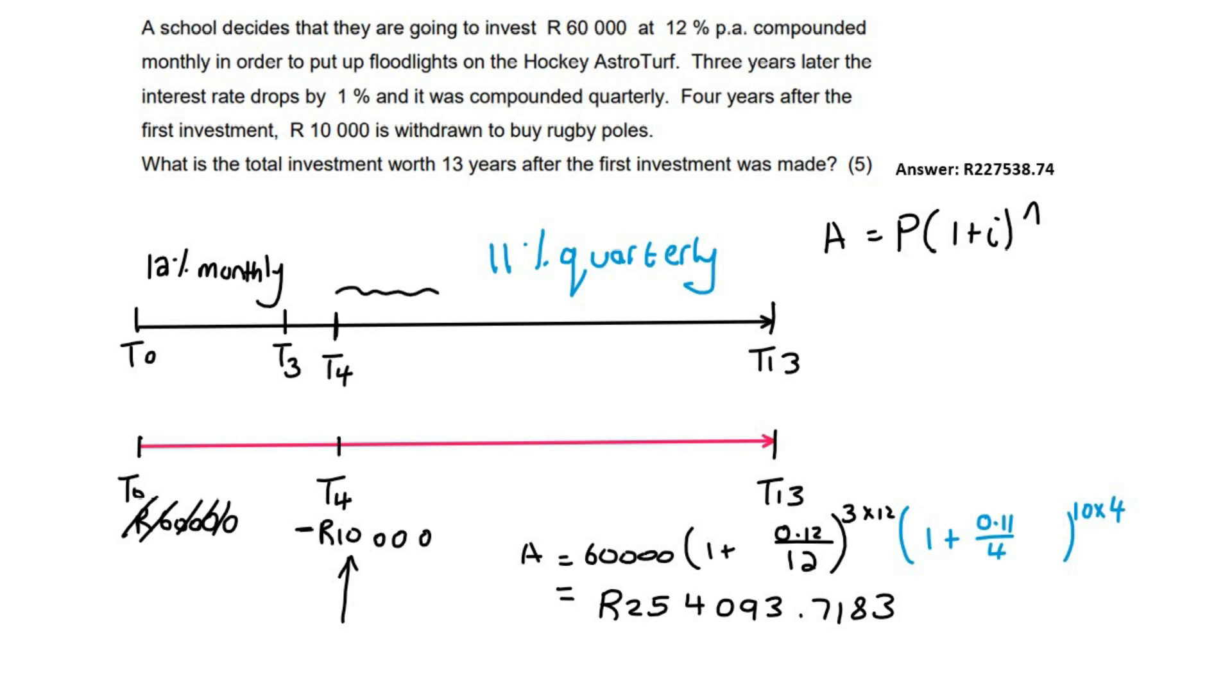So the only interest rate that it will experience is only going to be the 11% quarterly. It will not have this one because that one only happens between T0 and T3. So we can go work that one out. So I'm just going to say that this one is for the 10,000 Rand. Okay.